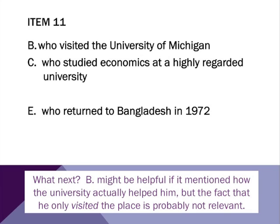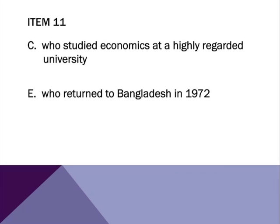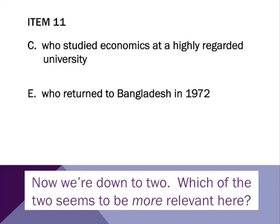As we continue to look at the answer choices, we notice other words too. The University of Michigan might be a very good university, but notice it doesn't indicate anything in terms of its connection to economics or studying economics. And the fact that he just visited the particular place doesn't necessarily help us here. So we can also eliminate B. Now we're down to just two choices. Looking at the two choices, which one seems to be more relevant — which one either seems to not hurt the information, or even perhaps make it stronger? The fact that he returned to Bangladesh is interesting, and the fact that the bank is in Bangladesh does help. But it really seems that the fact that he studied economics — and not just studying economics, but at a university considered to be highly regarded, meaning a respected institution — I think C is probably the best choice.